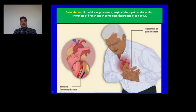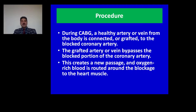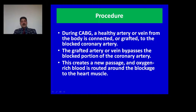Plaque can narrow or block the coronary arteries and reduce blood flow to the heart muscle. The patient presents with chest pain. If the blockage is severe, the patient presents with angina — chest pain or discomfort, shortness of breath — and in some cases, a heart attack can occur. In coronary artery bypass grafting, a healthy artery or vein from the body is connected or grafted to the blocked coronary artery distal to the obstruction. Proximal to the obstruction there is normal blood flow, but distal to it blood flow is less, so less oxygen is delivered to the cardiac musculature. The grafted artery or vein bypasses the blocked portion, creating a new passage so oxygen-rich blood is routed around the blockage to the heart musculature.